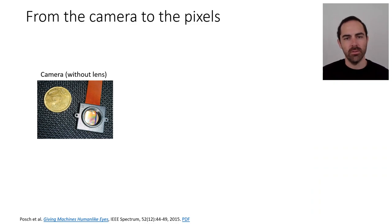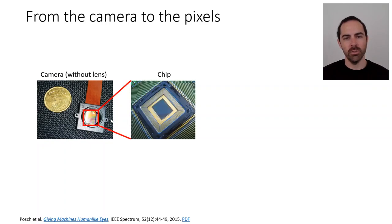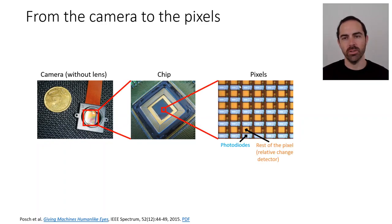So if we take a look from the camera going to the pixel, this is a camera. We zoom in a chip, and if we zoom in the chip we see the pixels. Each pixel of the event camera has a photodiode part that converts light into voltage, and then the rest of the pixel is detecting relative intensity changes.